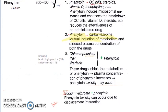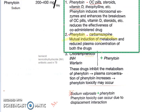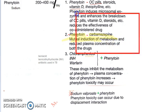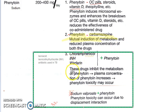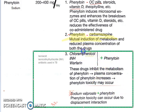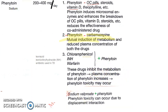To summarize the drug interactions of phenytoin: phenytoin reduces the effectiveness of co-administered drugs like oral contraceptive pills, vitamin D, and carbamazepine. Carbamazepine and phenytoin mutually reduce each other. Chloramphenicol, isoniazid, warfarin, and sodium valproate all potentiate phenytoin, increasing its toxicity — so if co-administered, reduce the dose of phenytoin.